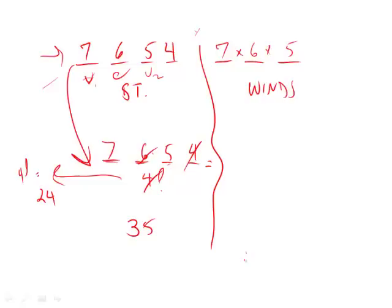Same concept: 7 times 6 times 5 divided by the number of dashes factorial. Three factorial is 6. Just like that, we also get 35.